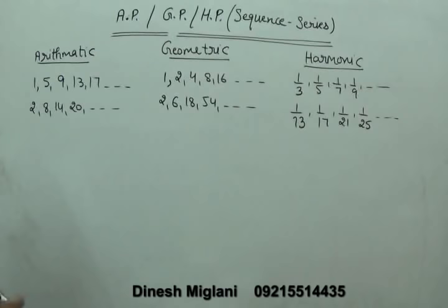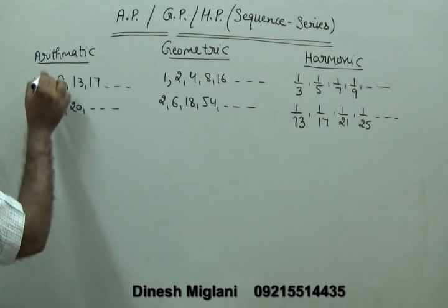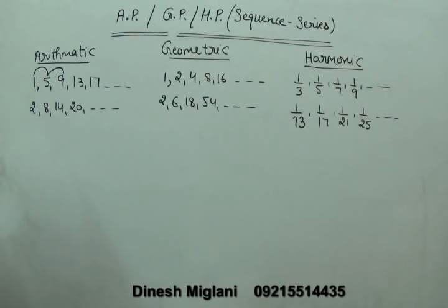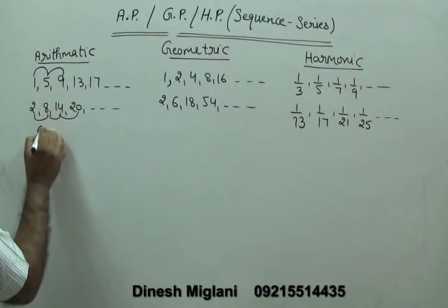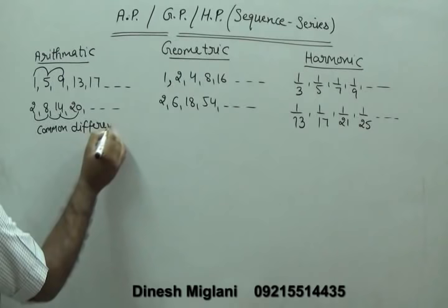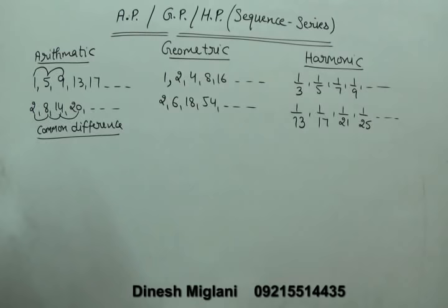Looking at the first series 1, 5, 9, 13, 17: the difference between consecutive terms — 5 minus 1 is 4, 9 minus 5 is 4, 13 minus 9 is 4, 17 minus 13 is 4. Similarly for 2, 8, 14, 20: the difference is always 6. The common difference in two consecutive terms is equal. A series where the common difference between two consecutive terms is the same is called an arithmetic progression.